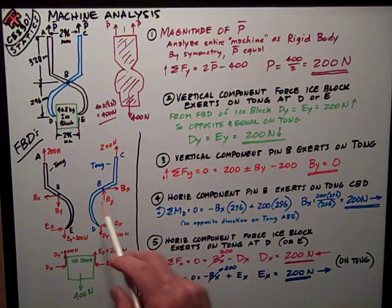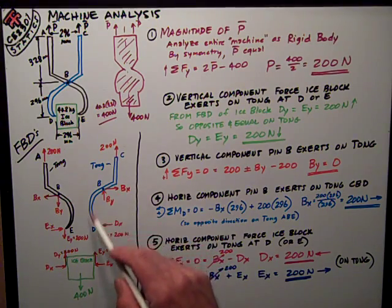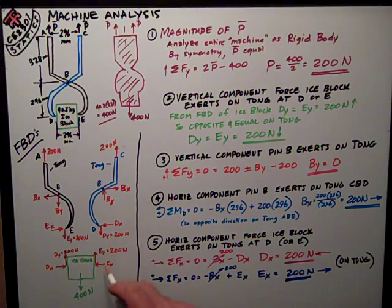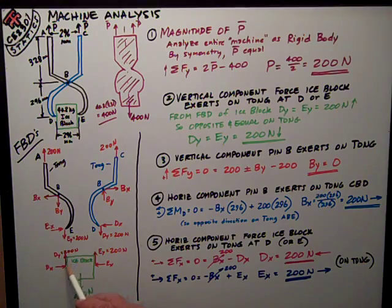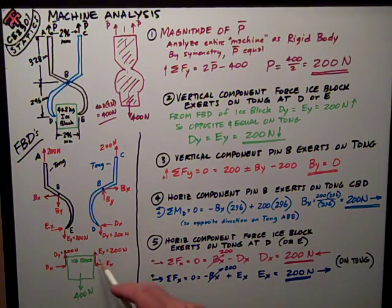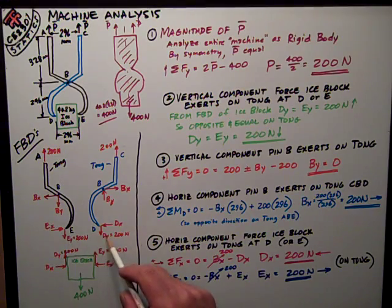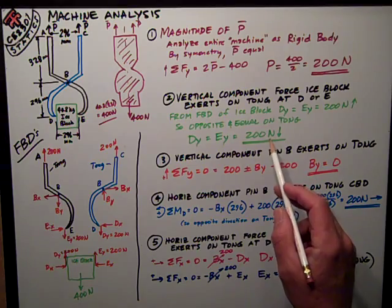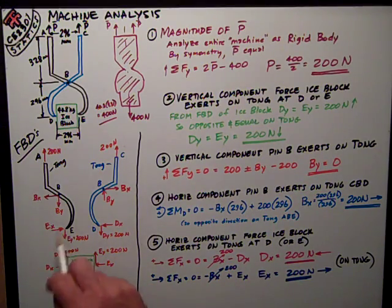Let's look at CBD from the free body of the ice block, dy, as I've already done this assumption, dy is 200 newtons up, so it's got to be equal to that on the tong. So dy is down 200 newtons. Same thing applies to tong ABE at point E.